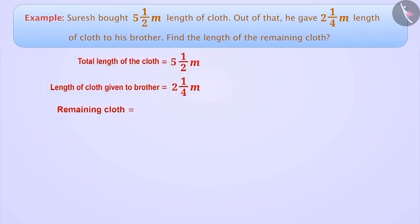Therefore, the length of the remaining cloth piece can be determined by subtracting 5 and 1/2 minus 2 and 1/4. To subtract, we write both mixed rational numbers in improper form.